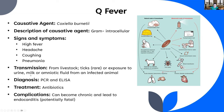Q fever has also been discussed as a potential bioterrorism weapon, though there's no documented case of it actually being used — it's just a bacterium that seems particularly amenable to such use. Diagnosis is via PCR (testing for DNA) or ELISA (testing for antibodies). Treatment is antibiotics. In rare cases it becomes chronic and can lead to endocarditis, which is potentially fatal.